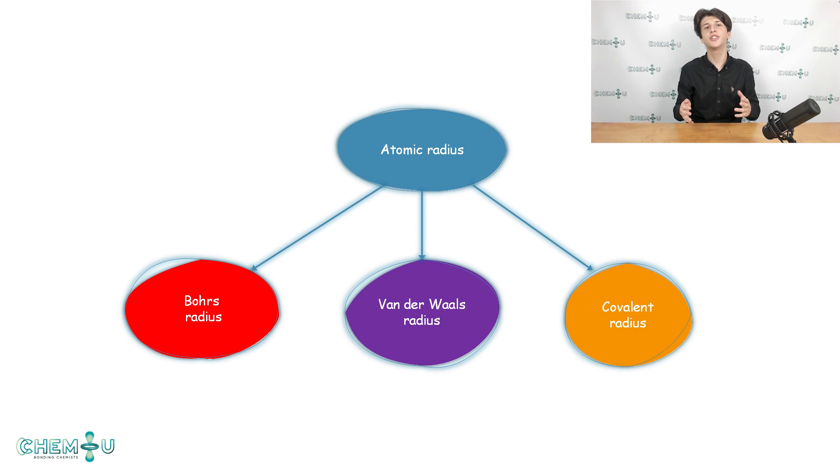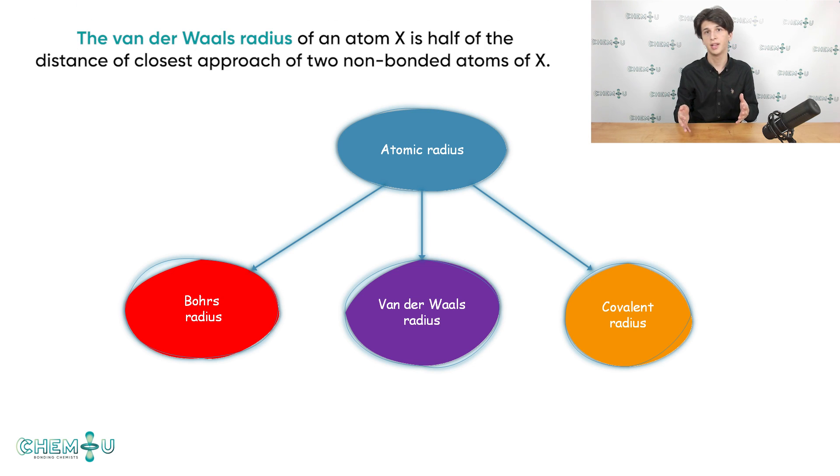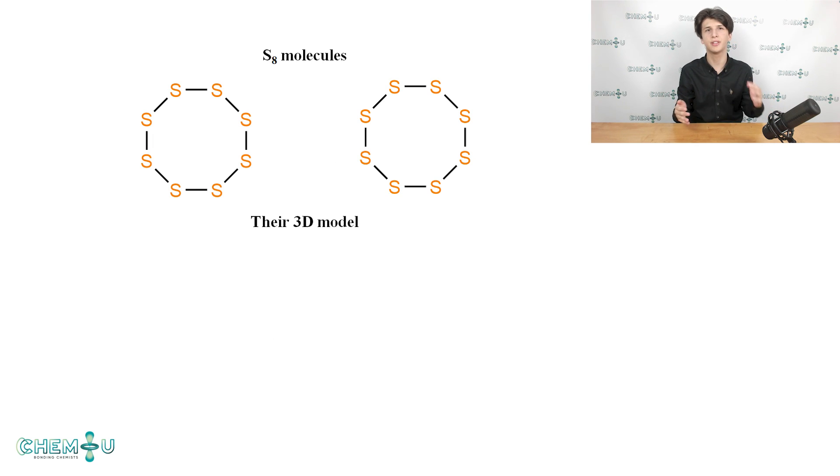The second definition is named after another renowned physicist Johannes Diedrich van der Waals. You probably have already heard about the van der Waals forces and van der Waals equation of state during inorganic chemistry lectures. The definition of atomic van der Waals radius is fairly simple. The van der Waals radius of an atom X is half of the distance of the closest approach of two non-bonded atoms of X. So let's illustrate this concept using the following example.